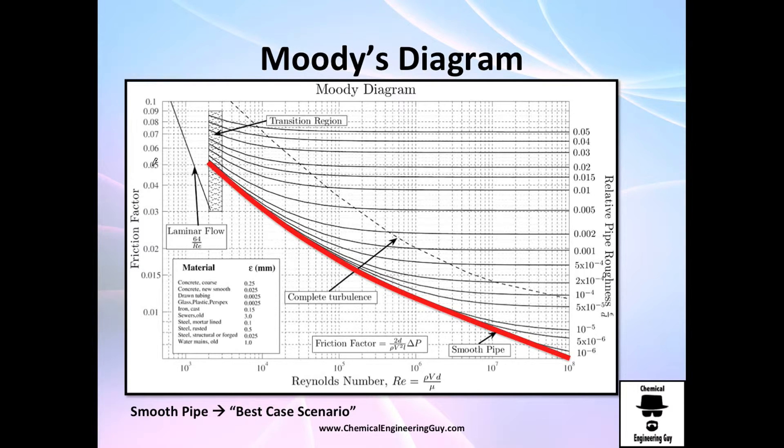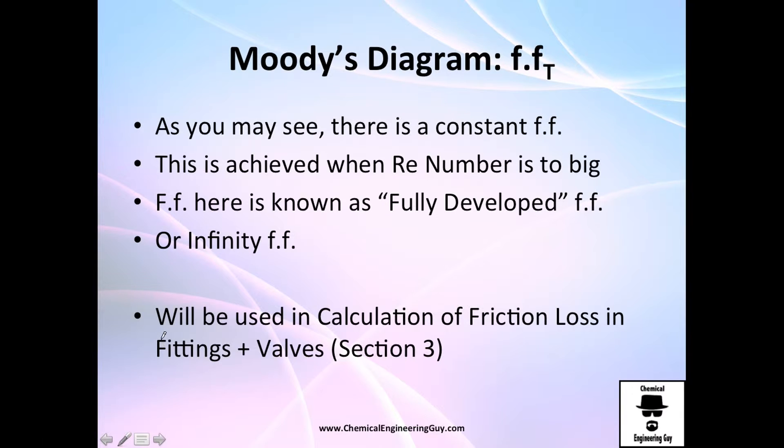Once again, if you want the best case scenario in which you have less friction factor, use the smooth pipe. So for example, you choose this at these different Reynolds numbers. You will have these about, for example, 17 and this will be technically speaking almost zero.